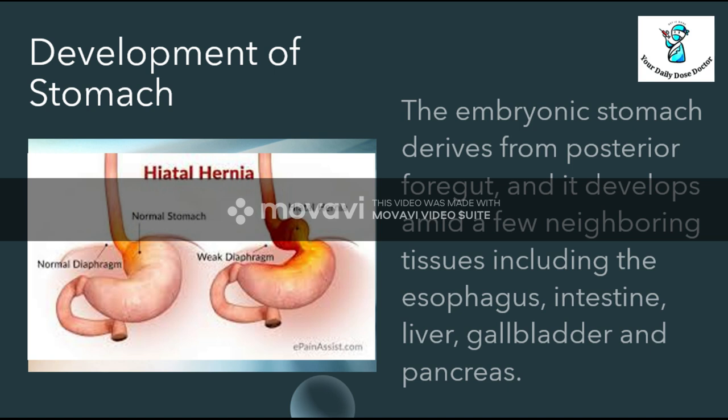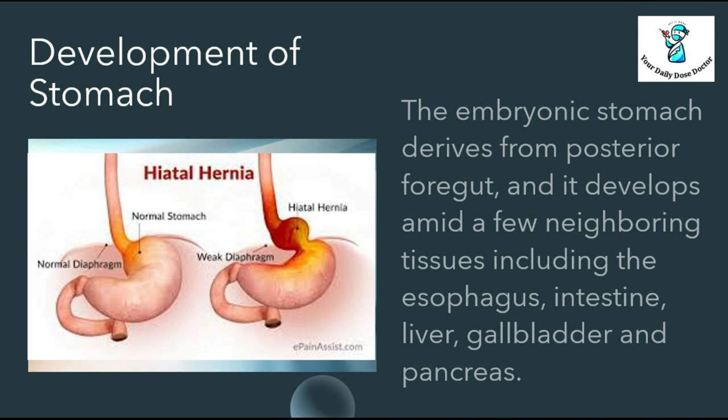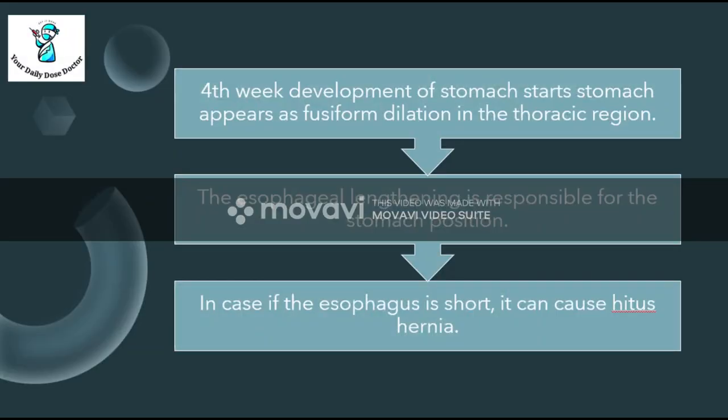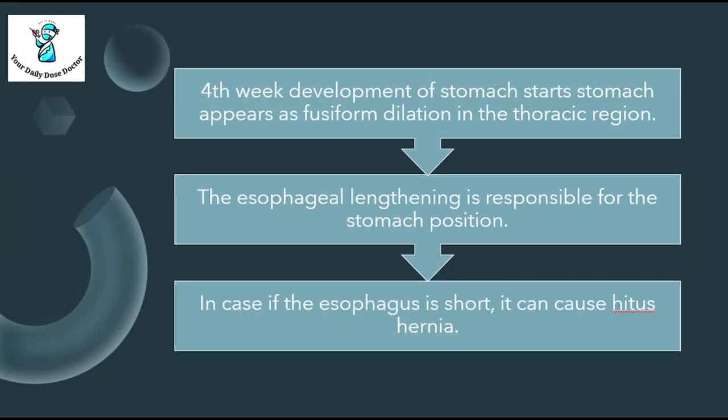Hello guys, as you know last time we discussed about the primitive gut. Now we will continue about the development of the stomach. The embryonic stomach basically derives from the posterior foregut, and it develops alongside a few neighboring tissues including the esophagus, intestine, liver, gallbladder, and pancreas. In the fourth week of development, the stomach starts to develop.